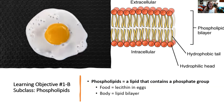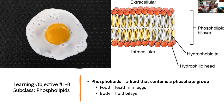In our body, we want to separate the fluid inside our cells — intracellular fluid — from fluid outside our cells — extracellular fluid. To do that, we use a lipid bilayer, and we use phospholipids that have a water-loving side and a water-hating side, which allow that lipid bilayer to separate the inside and outside of our body cells.